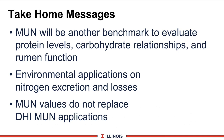Let's wrap up this module with a few take-home messages. Number one: MUN is just another benchmark to evaluate protein status, carbohydrate relationships, and rumen function. Next, environmental applications may be based on nitrogen excretion and losses — this is occurring in the Chesapeake Bay area right now. Finally, recognize that MUN values do not replace DHIA values and may vary from time to time, but both are very valuable tools. Thanks — that completes this module.